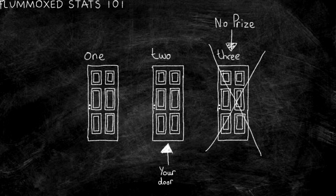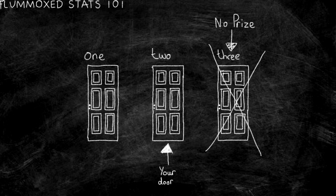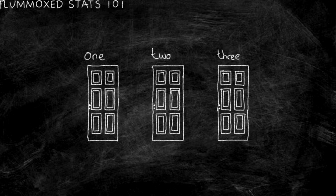At this moment, there are two closed doors, one of which you have picked. The prize is behind one of them, but you don't know which one. Monty asks you: do you want to switch doors? The question of the Monty Hall problem, whilst looking simple, is a bit baffling in reality.